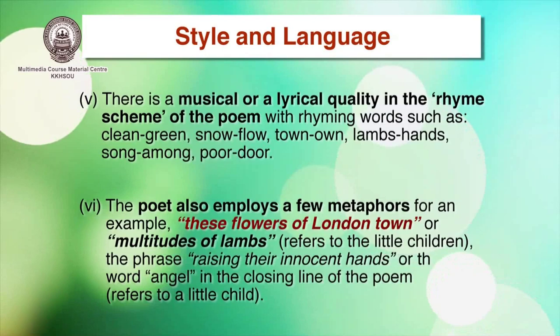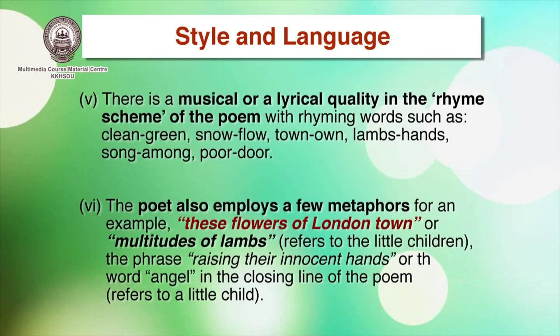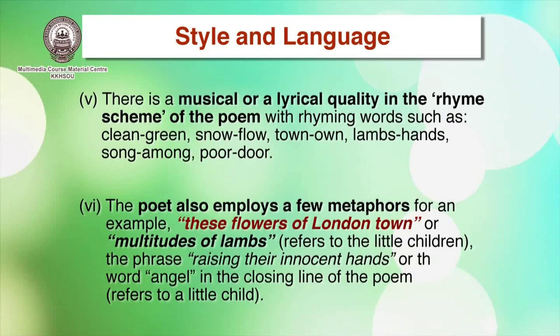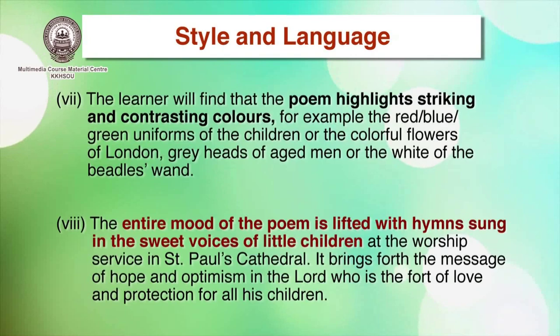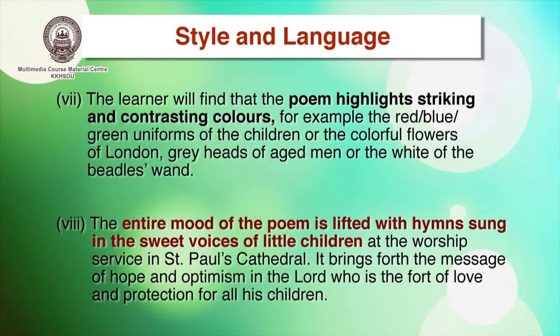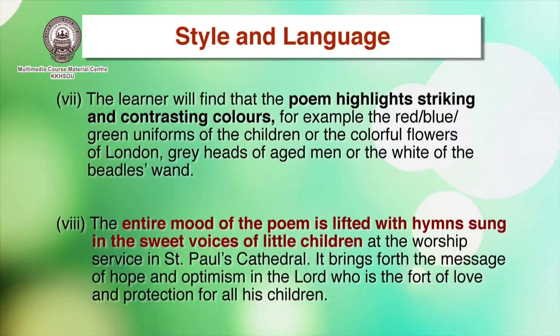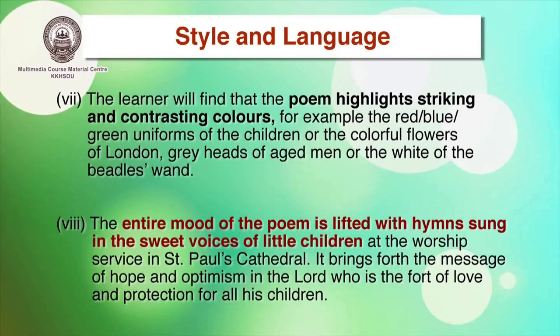William Blake also employs metaphors — for example, 'these flowers of London town' or 'multitudes of lamps' referring to little children. The phrase 'raising their innocent hands' and the word 'angel' in the closing line also refer to a little child. The poem highlights striking and contrasting colors: the red, blue, and green uniforms of the children; the colorful flowers of London; the gray heads of aged men; and the white of the beadles' world.